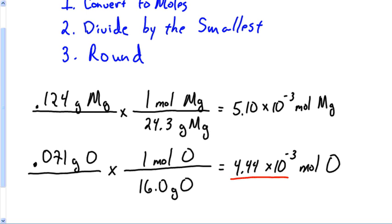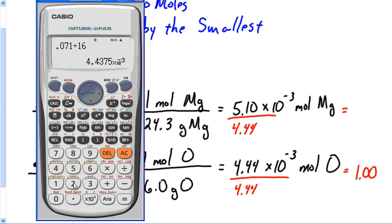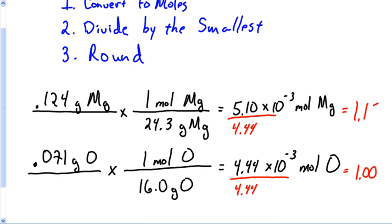All right, so step number one: convert to moles. I've done that. Step number two: divide by the smallest. Which of these two numbers is smaller? Hey, it's the second number. So I'm going to divide each of these by 4.44 times 10 to the negative three. Of course, the 10 to negative threes cancel, so I can just leave that off in my calculator. So what's 4.44 divided by 4.44? Easy, 1.00. And now what's 5.10 divided by 4.44? Well, it's going to be 1.1 something. 5.10 divided by 4.44 equals 1.15 rounded off.